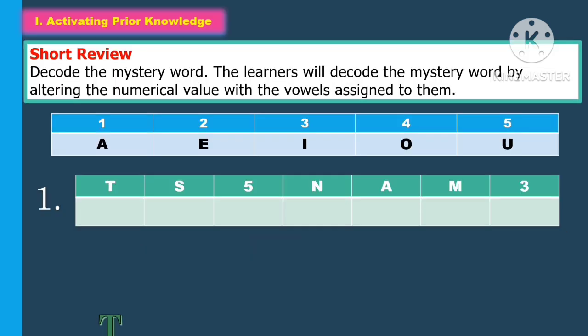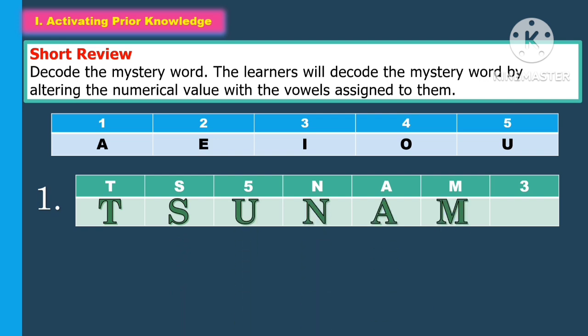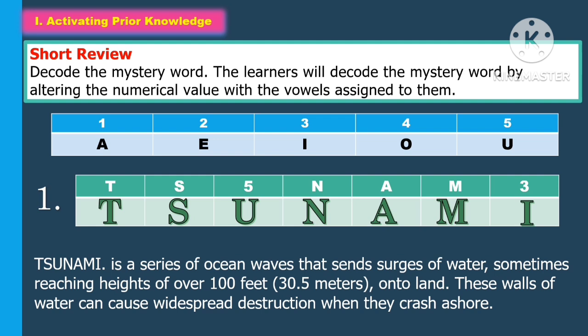In activating the prior knowledge for the short review, the students will decode the mystery word. The learners will decode the mystery word by altering the numerical value with the vowels assigned to them.